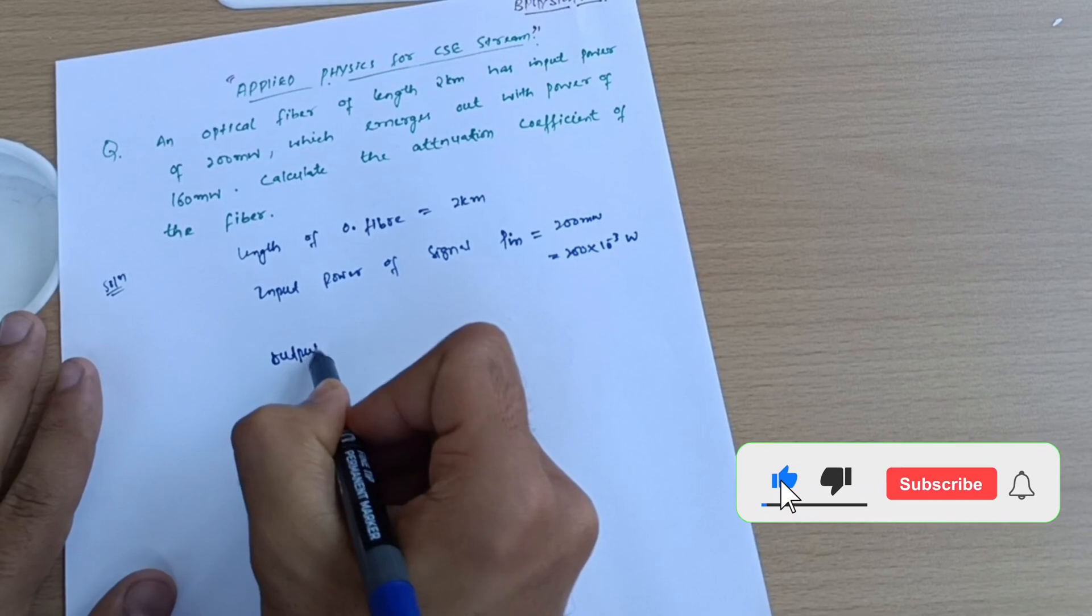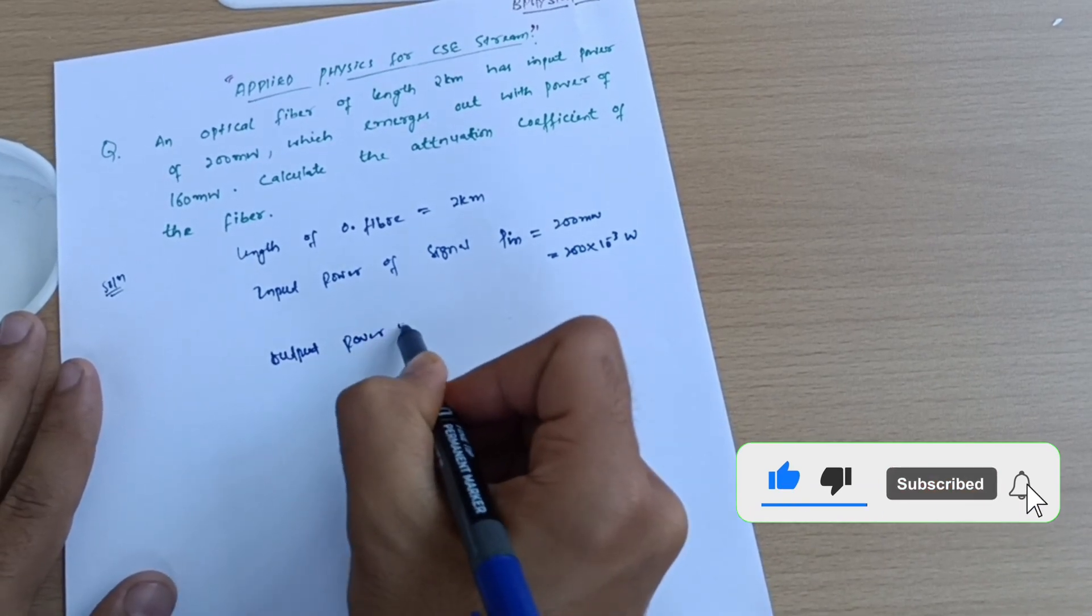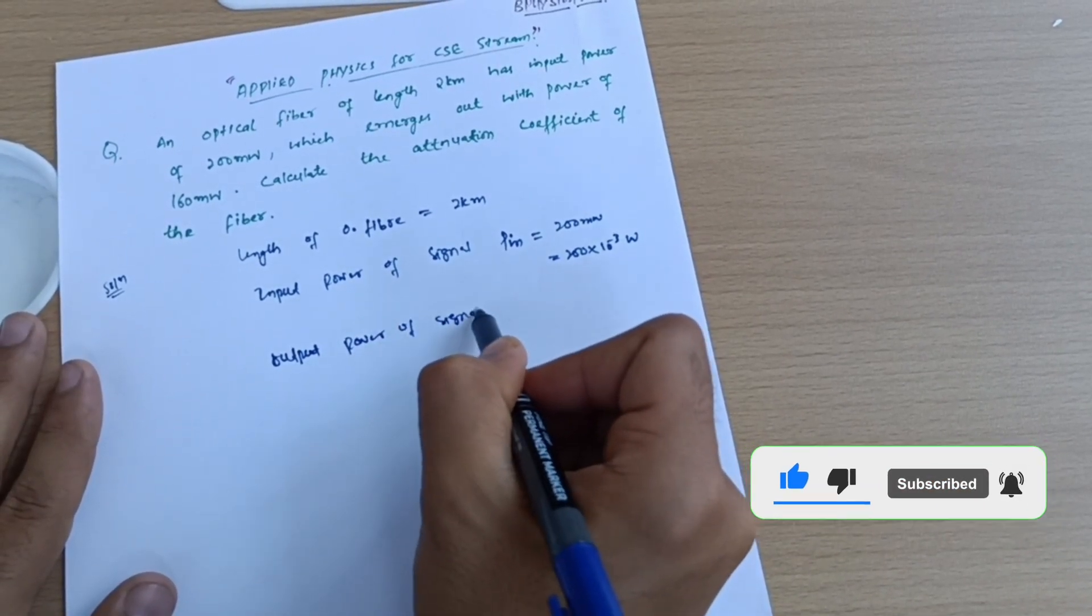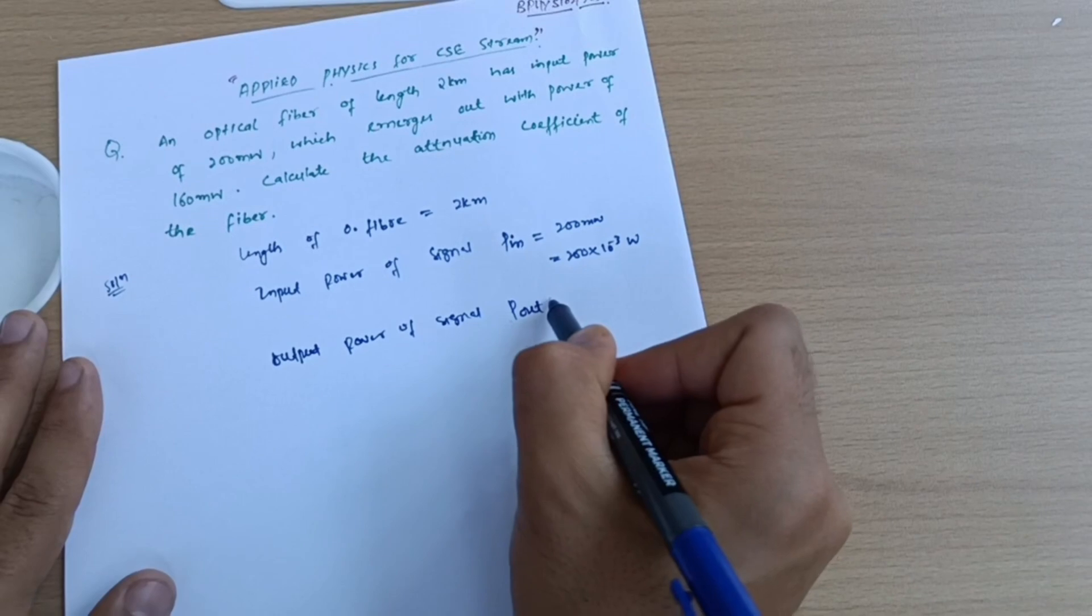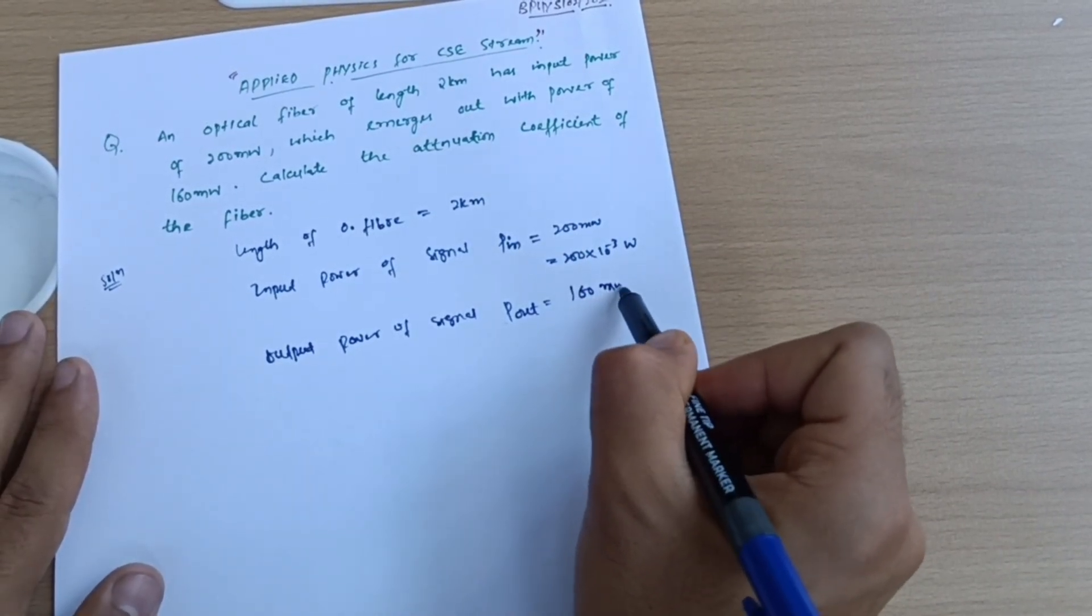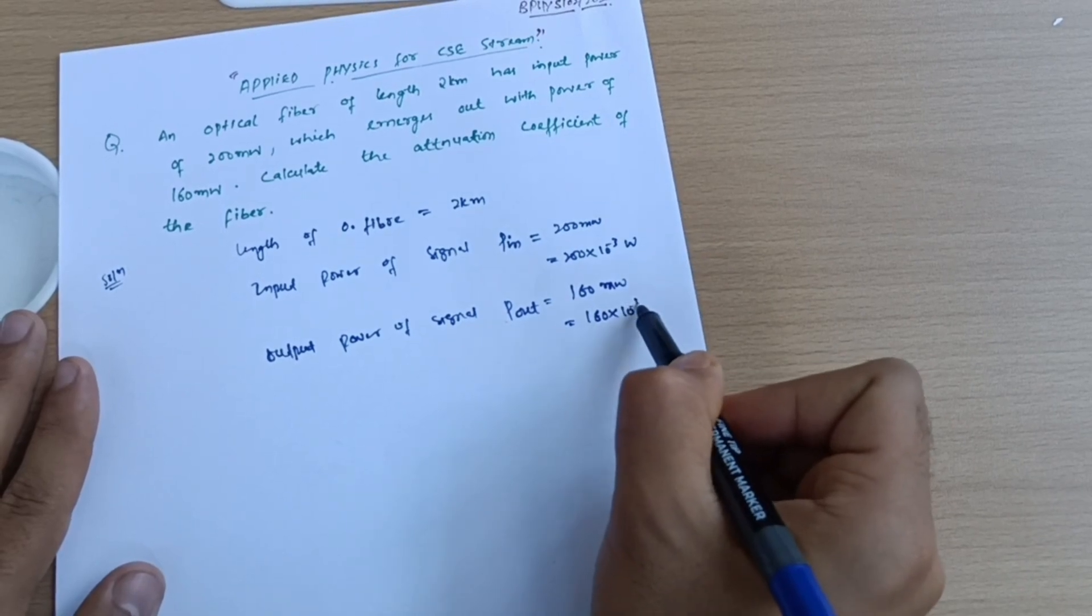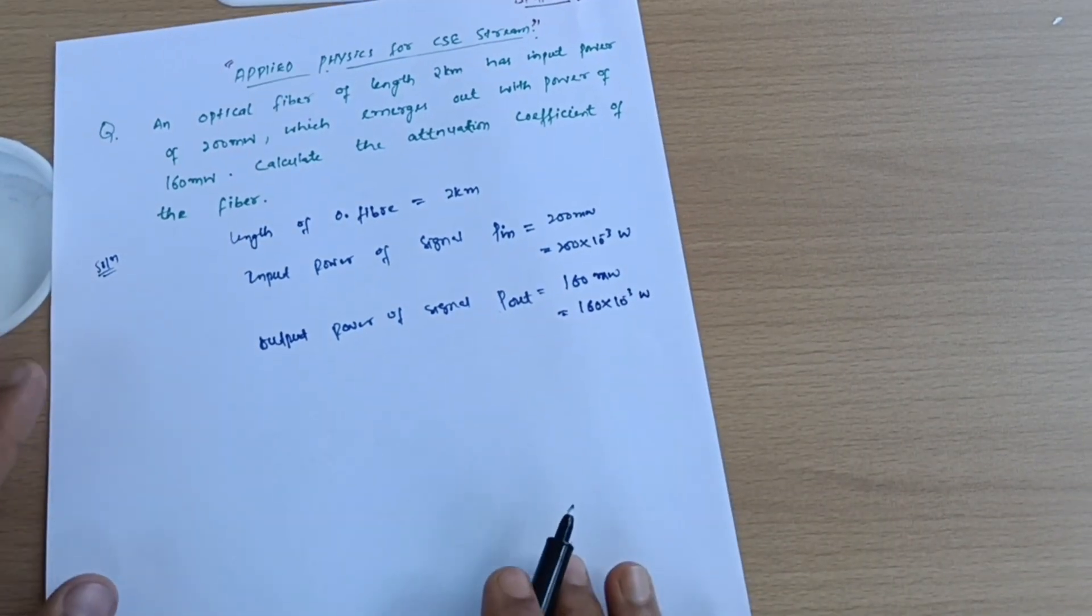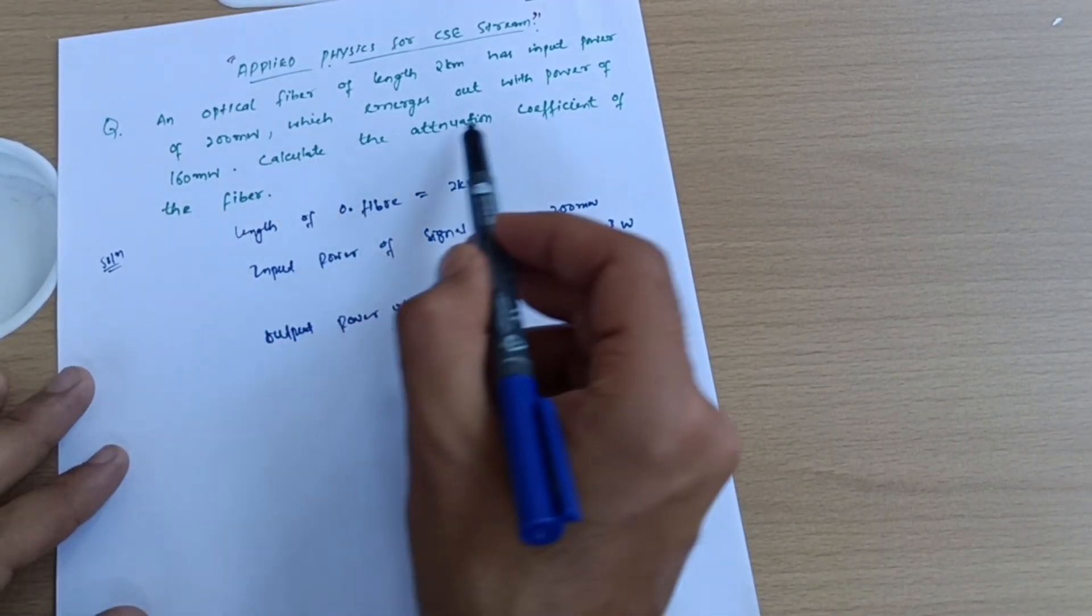Next is output power of signal, which is denoted by P_out, which is equal to 160 milliwatts, which is equal to 160 into 10 power minus 3 watts. In terms of watts you have to take down.